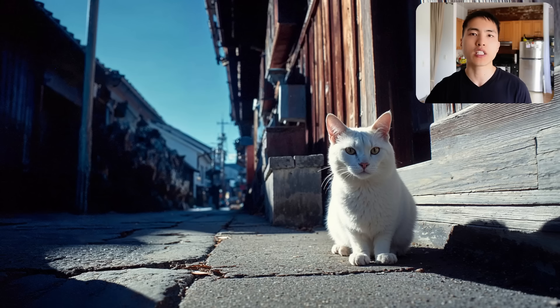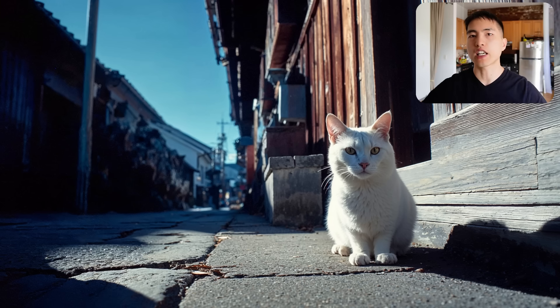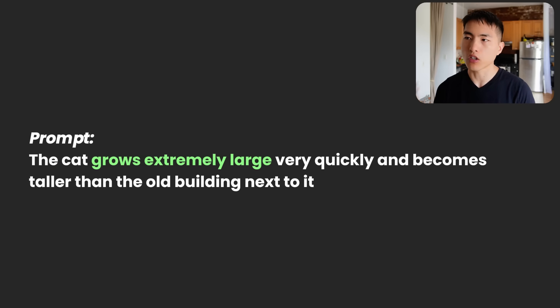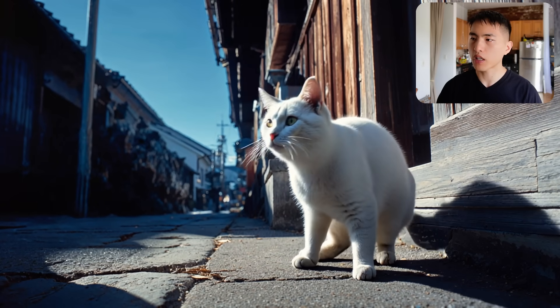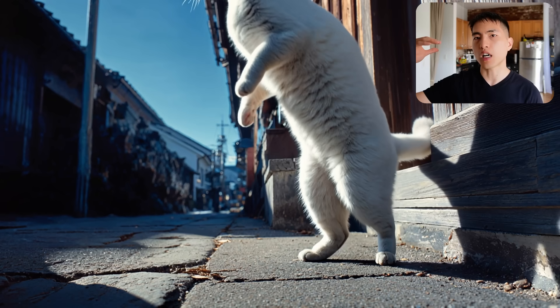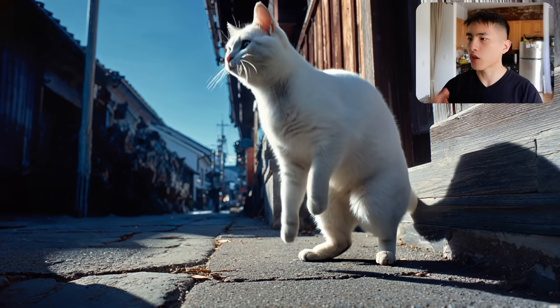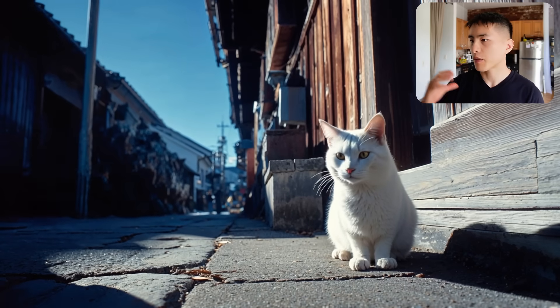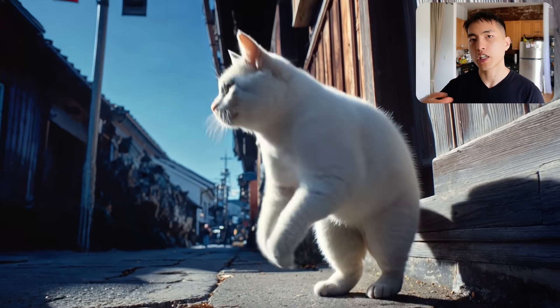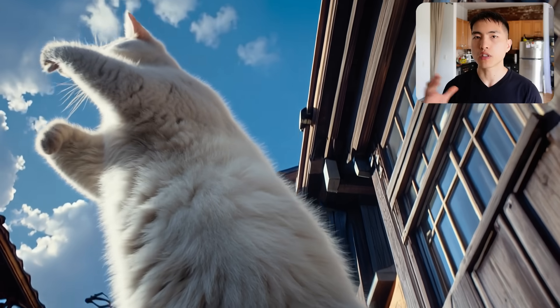You'll also want to introduce camera motions to make the most out of your visual effects. For example, I have an image of a cat and I want to make it grow really big and tower over the buildings like a giant. I'll try a prompt like 'the cat grows extremely large very quickly and becomes taller than the building next to it.' The problem is that while the cat does grow quickly, it cuts off its upper body — it outgrows the field of view. So I'll change the prompt and add 'the camera tilts up' to track the cat as it expands. This time the camera does a much better job of keeping track of the cat as it grows.